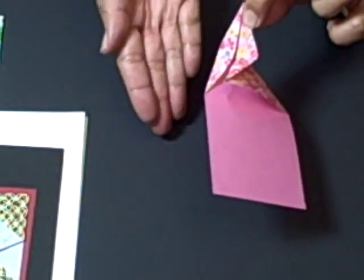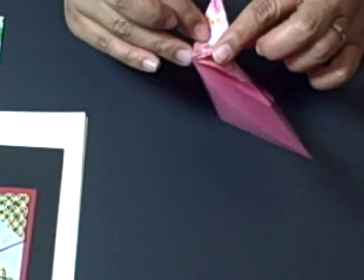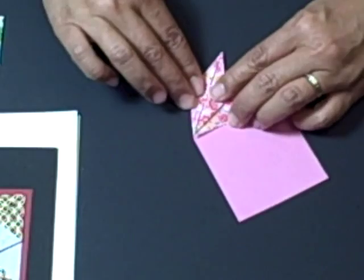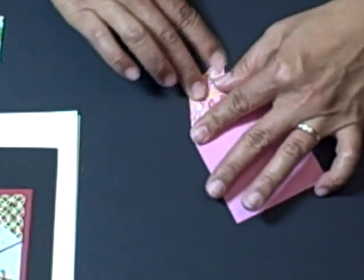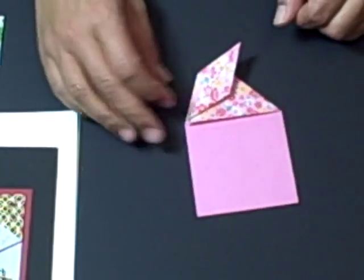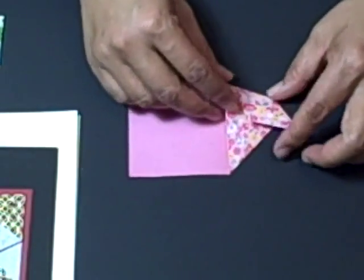See how the outer edges met and were folded in to meet in the center. Then go ahead and open it up, and what that did was create this diamond. Once this diamond is done, you're just about there.